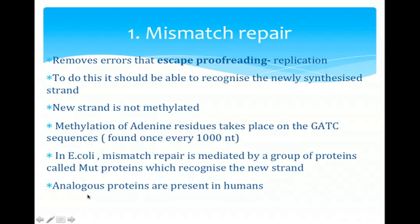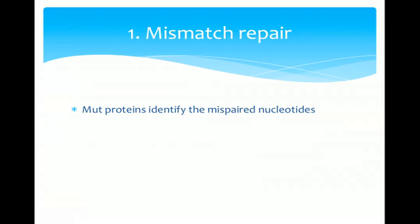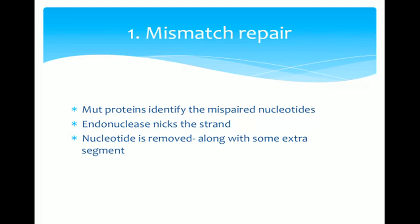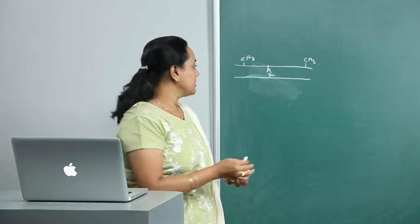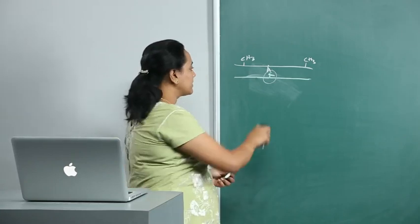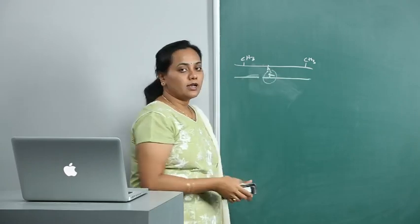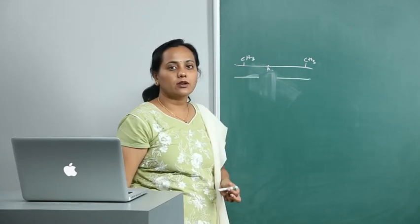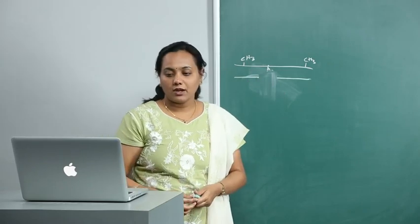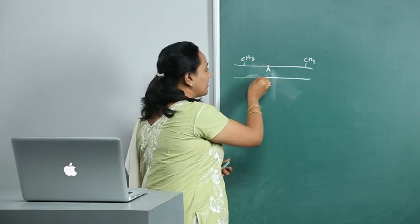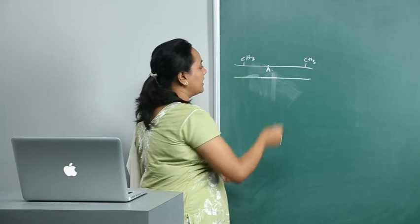The Mut proteins identify the mispaired nucleotides. An endonuclease then nicks the strand, and the mismatch nucleotide along with some extra segment is removed. There is now a gap in the new strand. This gap — along with some extra portion — is removed, and the gap is then filled by DNA polymerase. The nick is sealed by DNA ligase, and the new strand will contain the correct nucleotide.